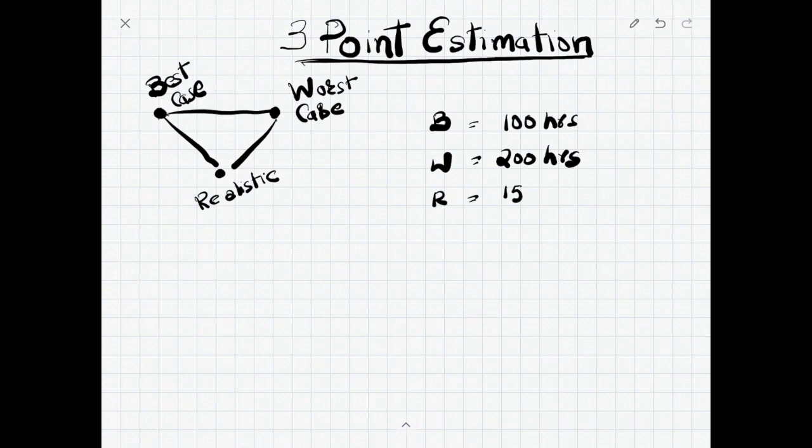So these are the building blocks of three point estimation. Let's take an example: best case hundred hours, worst case two hundred hours, realistic 150 hours. The three point estimation technique works on the formula. The formula is you take the best case hours, then you take the realistic multiply by 4, add worst case, and take the whole number divide by 6.